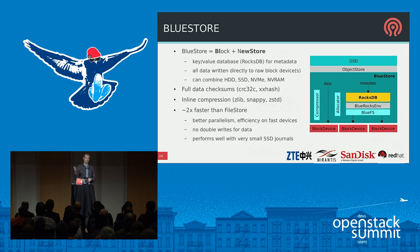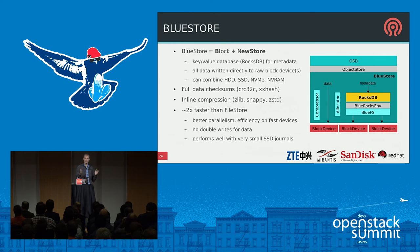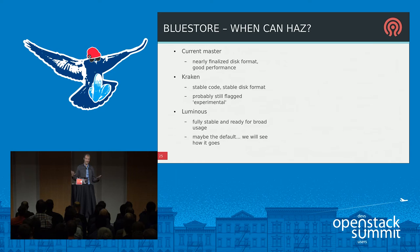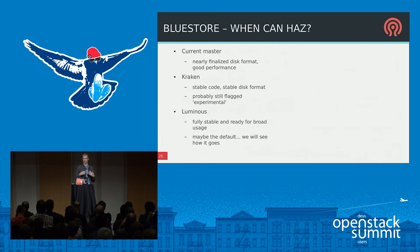Most importantly, BlueStore is roughly twice as fast as FileStore — for SSDs and hard disks, large IO and small IO. We get better parallelism and efficiency on fast devices, we eliminate double-writes from data journaling, and it performs well even with very small journals — hundreds of megabytes instead of gigabytes. Lots of people are working on this with contributors from SanDisk, Mirantis, and CTE. In Kraken we'll have a stable code base and stable disk format, though it will likely still be flagged as experimental. The goal is for Luminous to have it fully stable and potentially the default instead of FileStore.